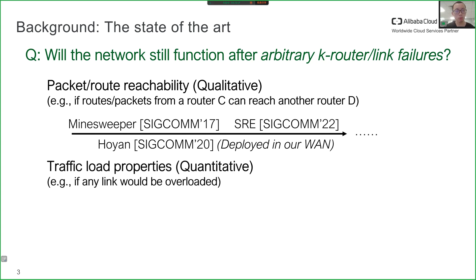Hoyan, published at SIGCOMM '20, is a system that can verify such properties and has been used in WAN for years. Another set of network properties is related to traffic load, such as whether a link could be overloaded. These properties are quantitative and have only received attention in the last few years. Therefore, state-of-the-art works still face fundamental limitations.